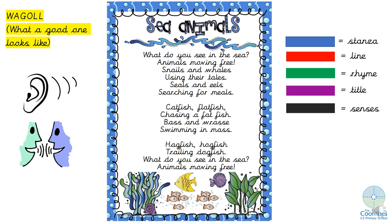Let's have a look at the answers. A stanza — can you remember what a stanza is? A stanza is like a paragraph in a poem; it's a group of lines together. This is a stanza, this is a stanza, and so is this — groups of lines. How many stanzas in the poem? One, two, three. There are three stanzas in this poem.